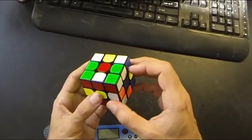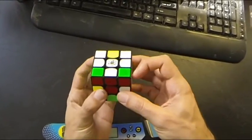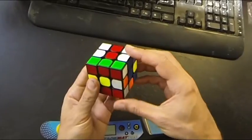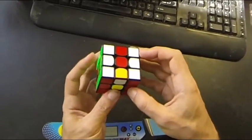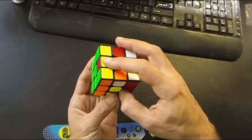So I go F and then I go U prime M U, M prime F prime, and I solve those pieces. Then I immediately do an L2 to bring the next slot up to the left.